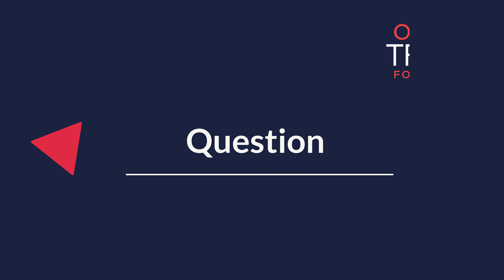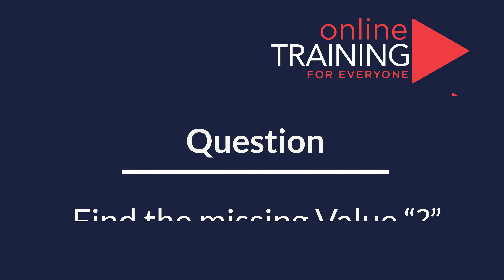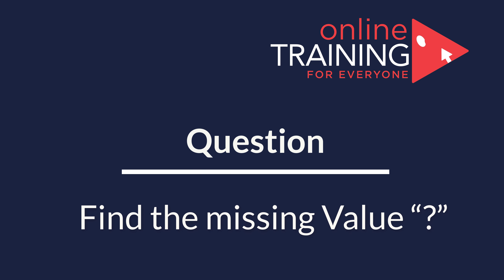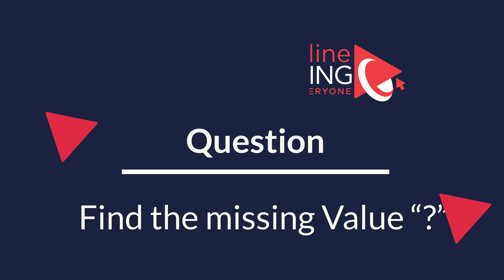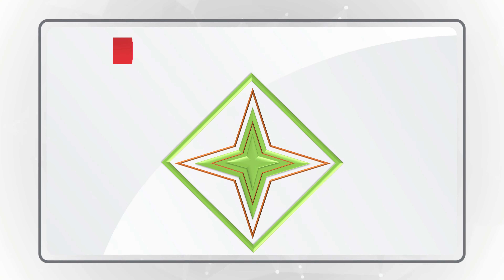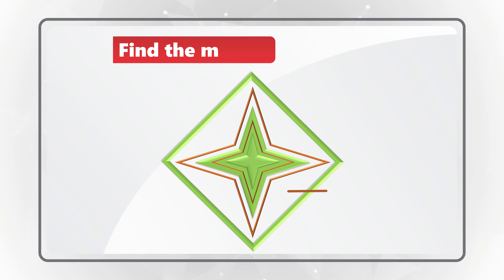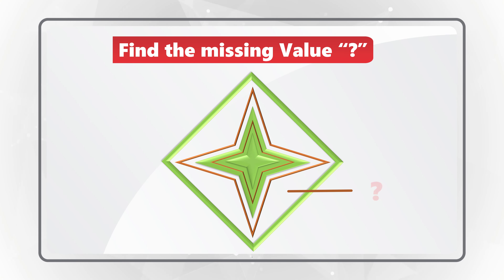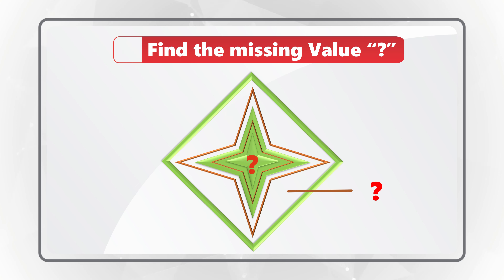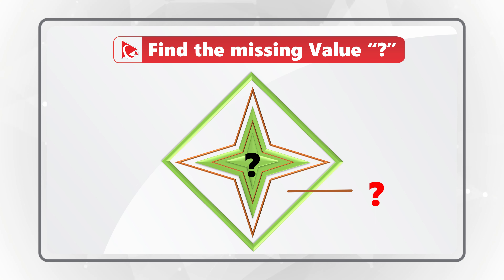Here's an amazing question where you need to find the missing values. Missing values are represented by the question mark and are located on the outside and inside the star. The star is hosted inside the diamond, and this combined figure has numbers around it.